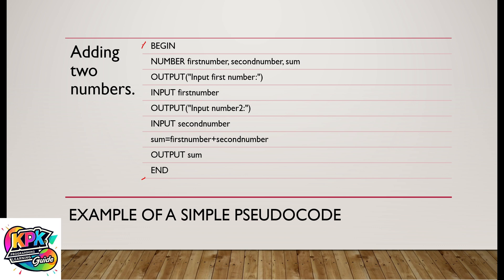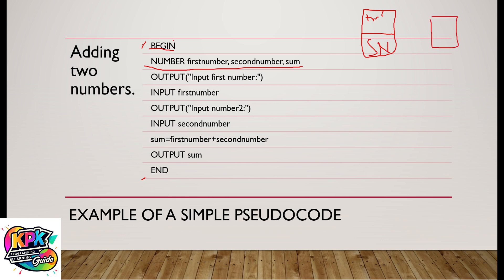So in this problem we are trying to add two numbers. In order to solve the problem, we analyze it, clarify what we need, set our goal — which is the sum of the numbers — and then choose a potential solution. First we begin. We declare two variables: variable 'first_number' and variable 'second_number'. A variable is like a container that stores data. We also declare a third variable called 'sum', which is going to keep the addition of these two numbers.